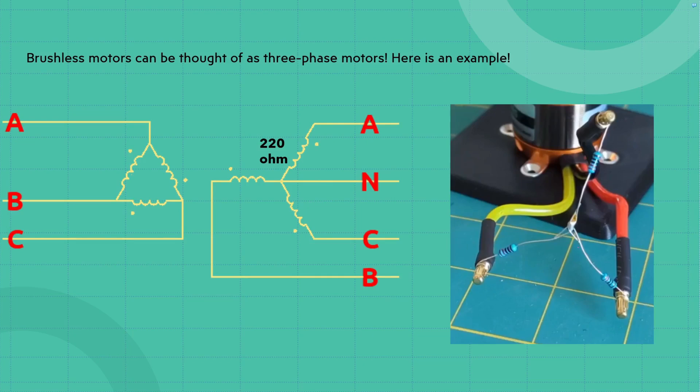And here's an example that I actually hooked up. So what I actually did was, I just soldered three resistors together and then hooked up each of the outside of these resistors to each of the phases of the brushless motor. And these are just 220 ohm resistors. Now one other thing that you can actually see here, I'm using the Y configuration right here.